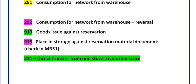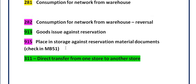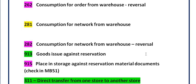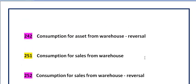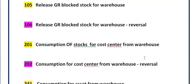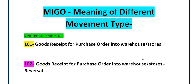Movement type 311 allows you to directly transfer inventory from one storage location to another storage location within the same plant. These are the movement types frequently used in daily activities, and you can easily track all of this data in MB51.